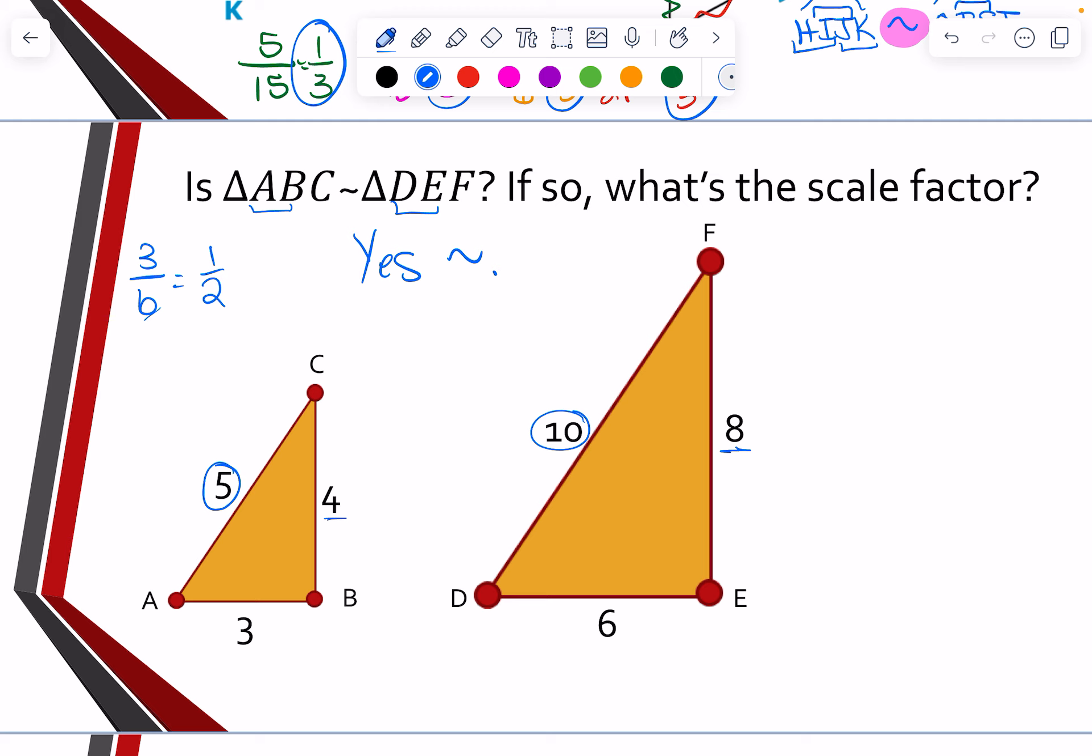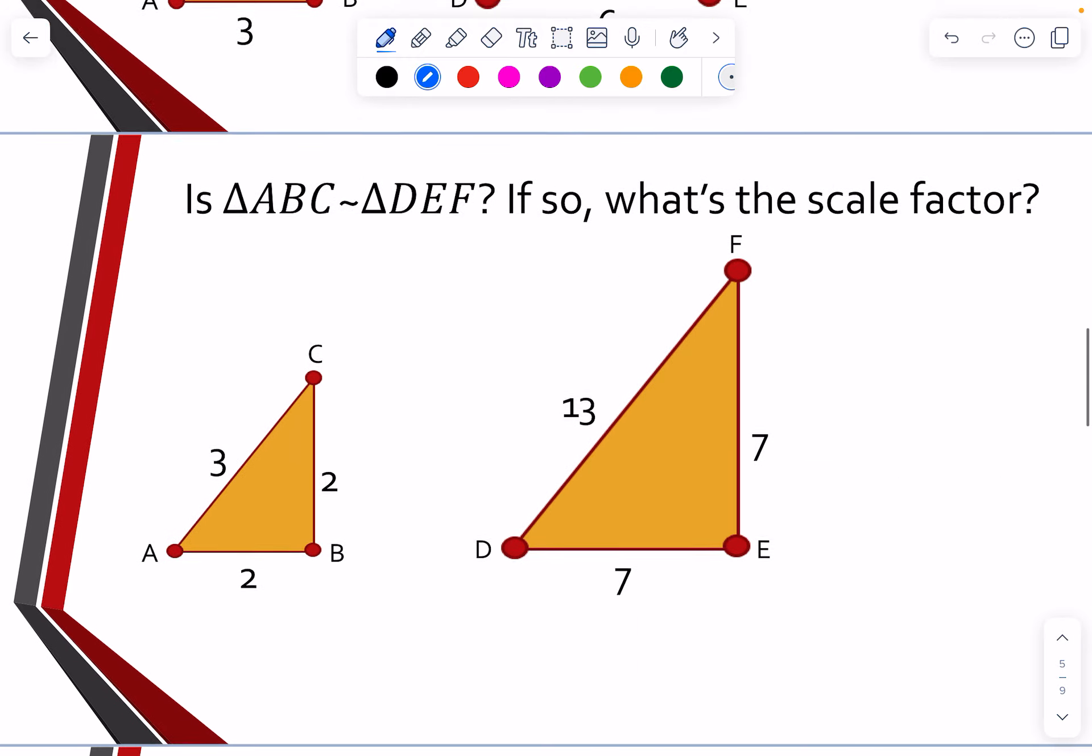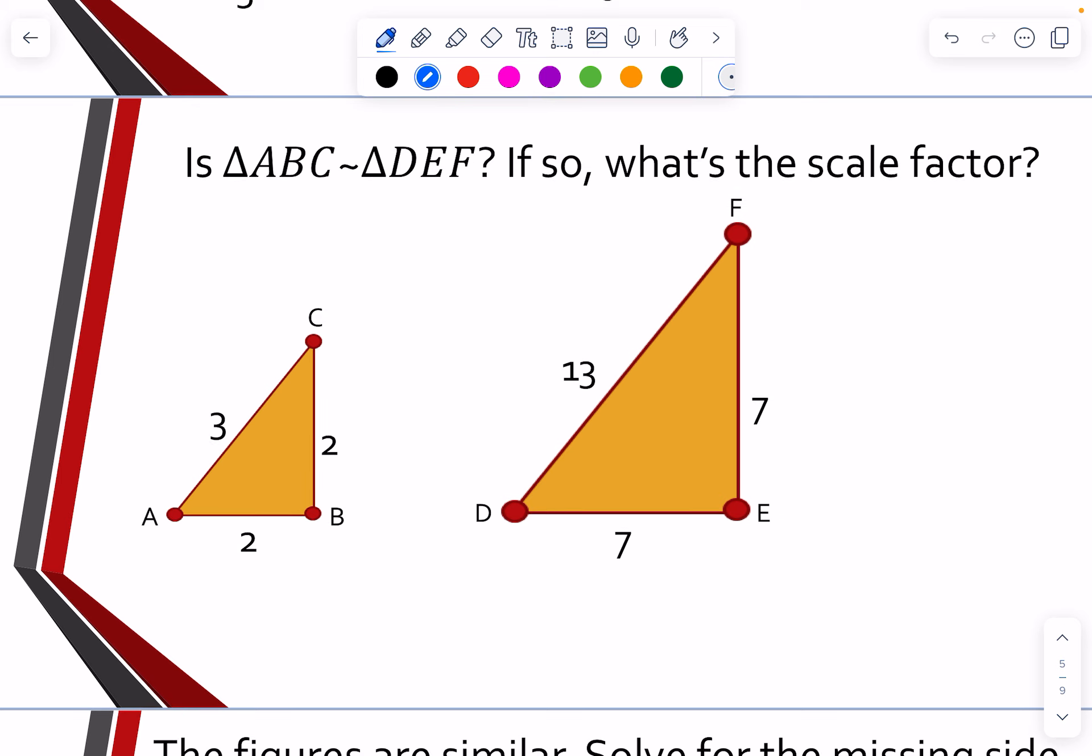So what's the scale factor? The scale factor would be 1 half. That's what's getting me from the ABC triangle to the triangle DEF. Let's try another one then. Here, is triangle ABC similar to triangle DEF? Well, again, we start off.